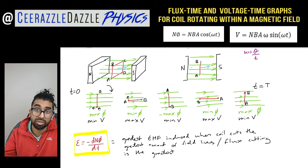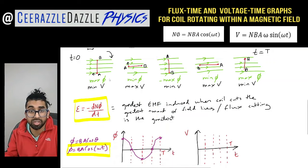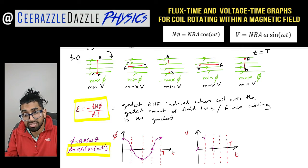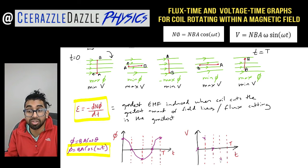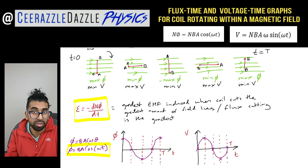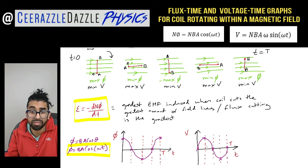Now let's sketch the voltage against time graph. Initially the voltage is minimum — there's minimum cutting. Then we get a maximum — greatest cutting. Then it drops down to zero again. Then maximum in the opposite direction, then minimum once more. So we end up with a sine graph. One of them is a cosine (flux) and this one is a sine graph.